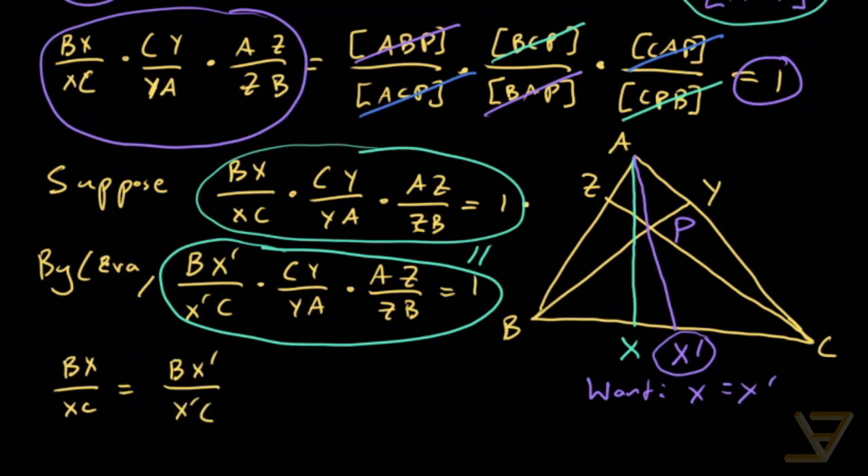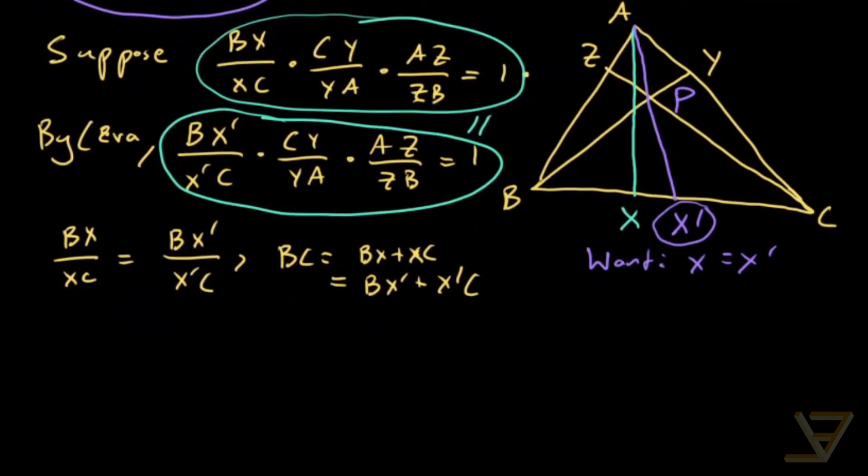But we also know something else. We know that BC is equal to BX plus XC. And we know that that's also equal to BX prime plus X prime C. So what that tells us is that we can make a substitution from here into here and into here.